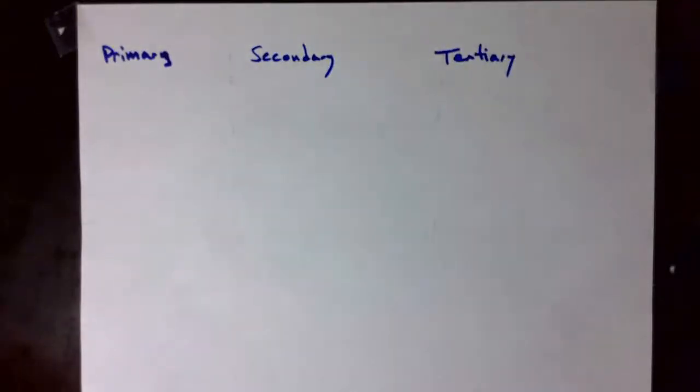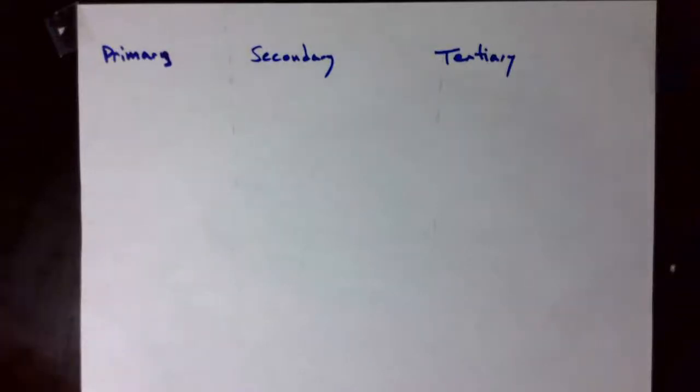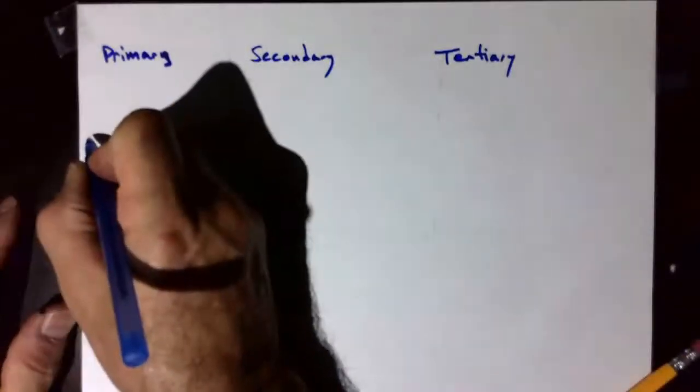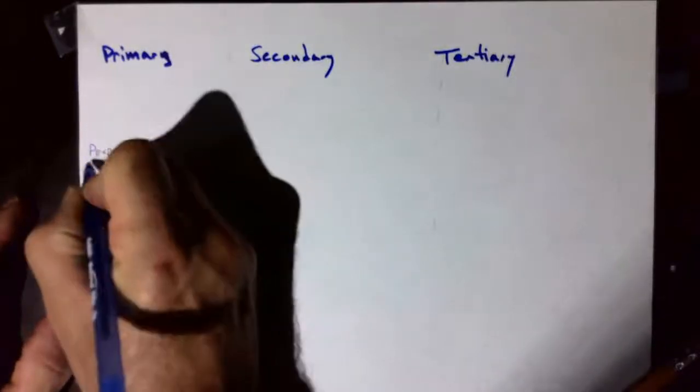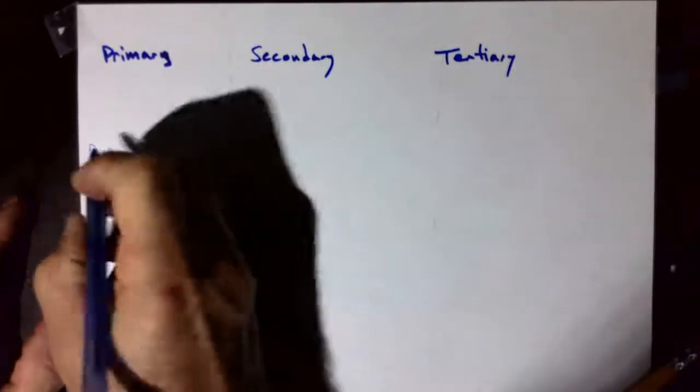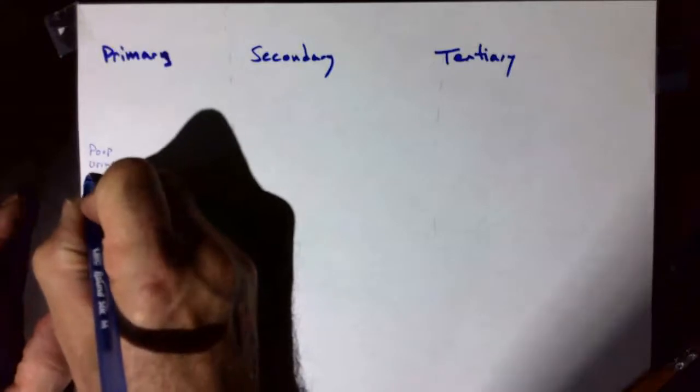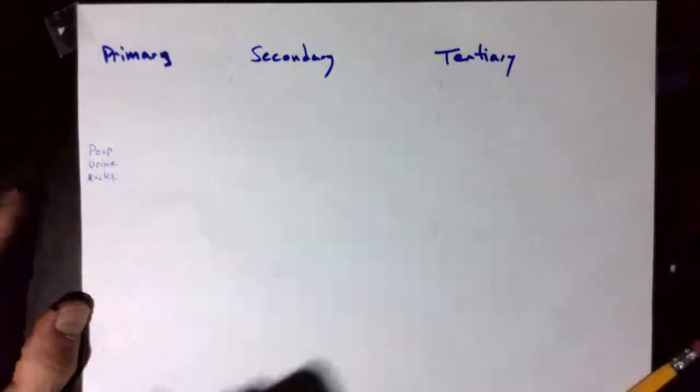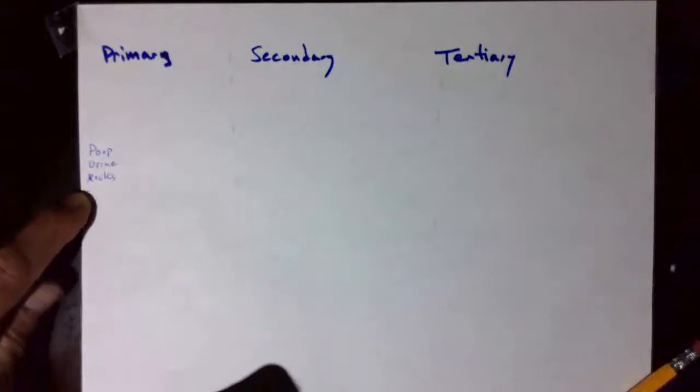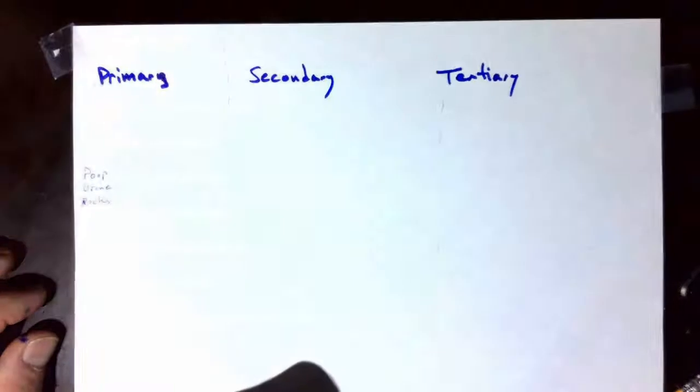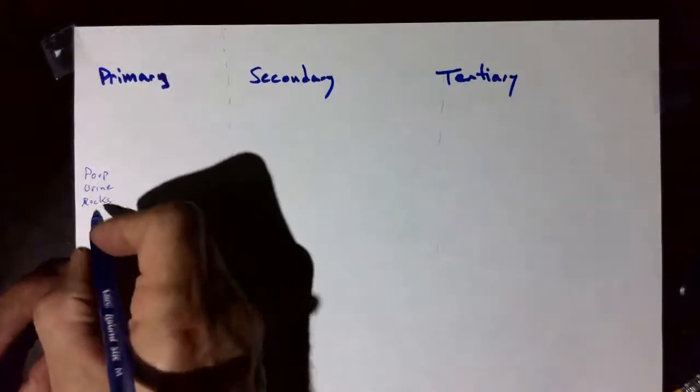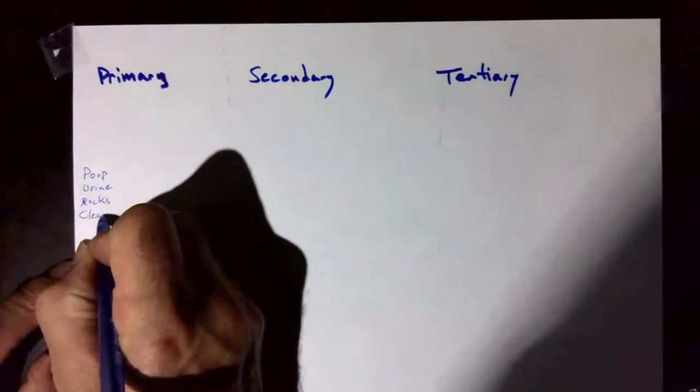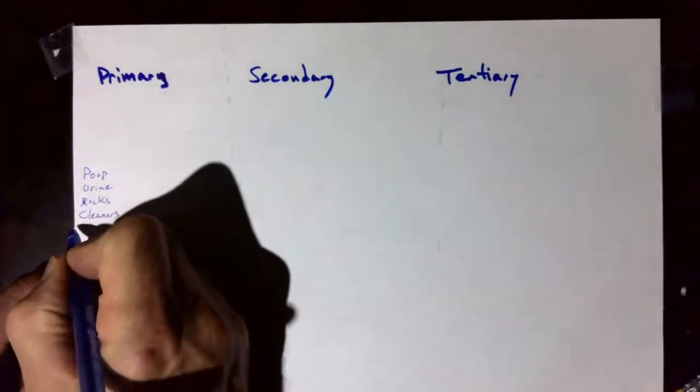All right, so what do we start with? We start with dirty water, right? Dirty water is going to have poop in it, it's going to have urine, it's going to have rocks because that's what you wash off your hands—soil which has got rocks in it. Make sure this is focused.